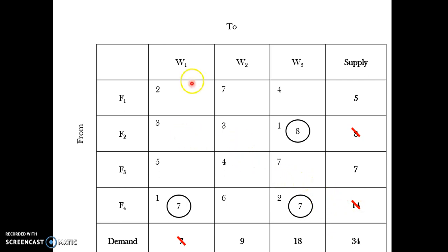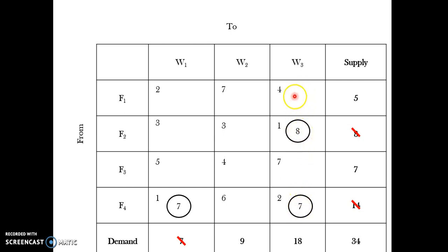I search again and find minimum cost 3. W1 is already fulfilled and F2 has no supply left, so those options are gone. The next minimum is cost 4, appearing in two cells. Looking at F1→W3: W3 has received 15 units (8+7) and requires 18, so only 3 more are needed. Despite F1 having 5 units, I can only ship 3 to W3.